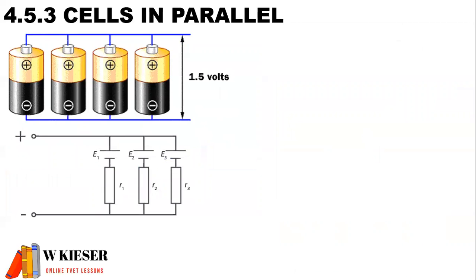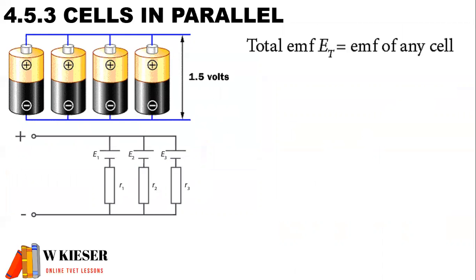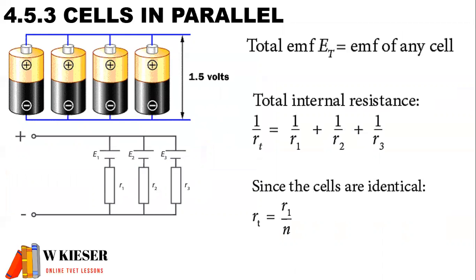When dealing with cells in parallel, here we have a circuit diagram and a pictorial diagram of cells connected in parallel. For cells in parallel, the total EMF is equal to the EMF across each cell. For the total internal resistance, we can either use the formula 1 over R_T, or, because each cell is exactly identical, we can calculate the internal resistance as the value of the internal resistance divided by the number of cells, which makes it a little easier to calculate.